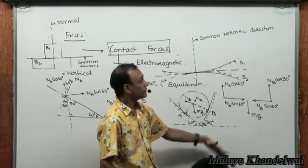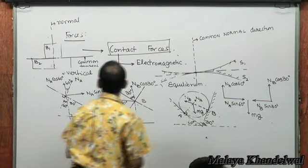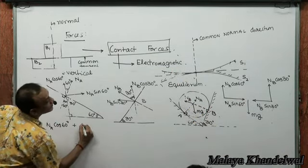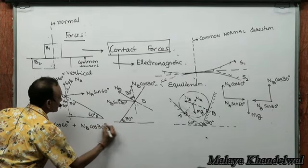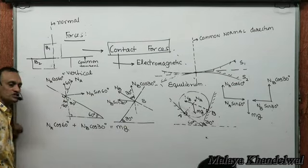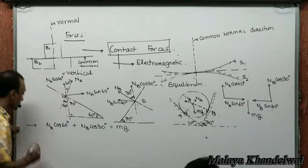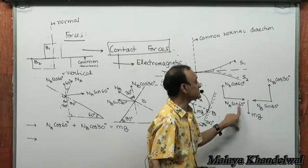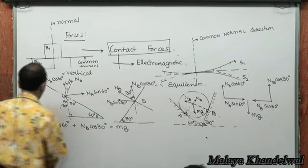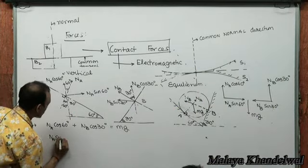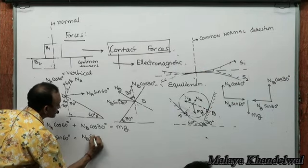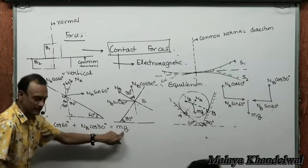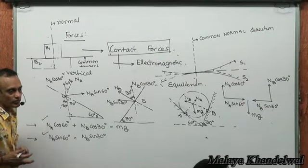Vertical forces must cancel: NA cos 60° plus NB cos 30° must balance the weight MG — this gives vertical equilibrium. Horizontal forces must also cancel: NA sin 60° must equal NB sin 30°. Two equations, two unknowns — you can solve for NA and NB from these two equations.